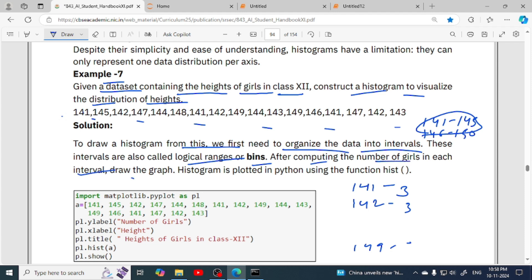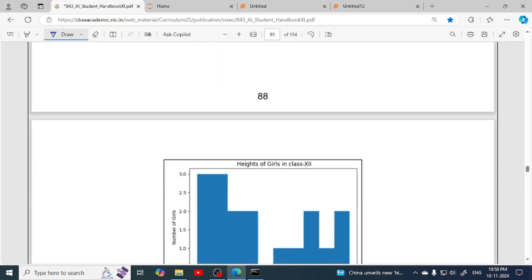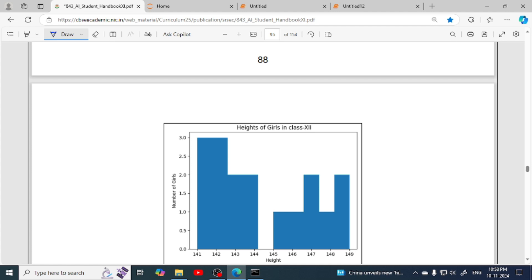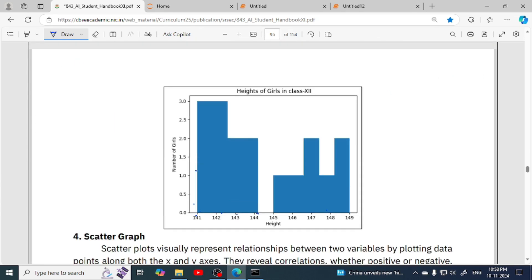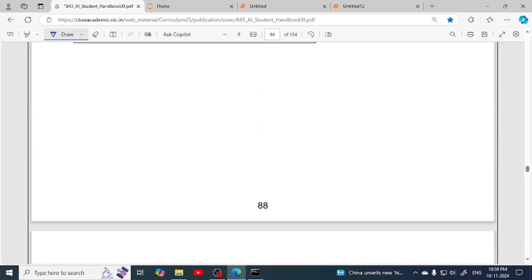After computing the number of girls in each interval, we draw the graph. For example, here 141 has frequency three, here three, so here we have three values. If you see each and every value, 141 has three, then 142 also has three, then 143 has two, and 144 has two. In this way we plot the frequency.